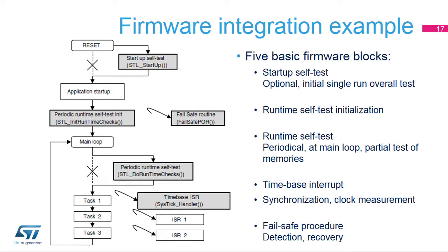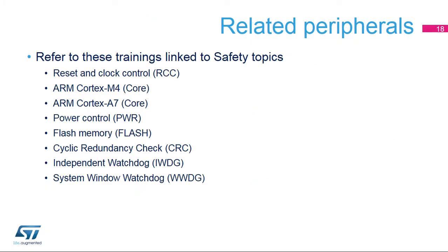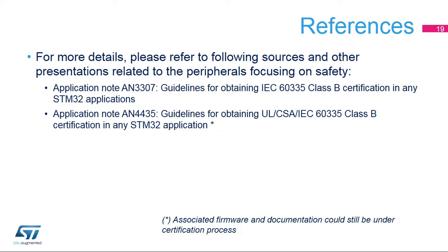Optionally, a one-time initial startup overall self-test can be additionally implemented at power-on or after application reset. Whenever a malfunction or discrepancy is found during these tests, the fail-safe routine is called. It should put the application into a safe state and determine the next recovery possibilities. Safety is spread over the full STM32 MP1 product range. For more details, please refer to dedicated documentation and contact your local ST representatives for the availability, status, and possible delivery of the firmware and associated documentation.